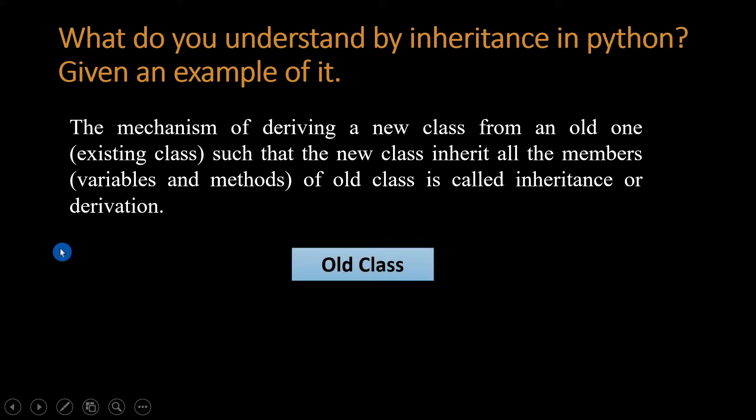You see, I have one old class that has methods and variables. I want to access those in a new class, the child class. I want to access the old class variables and methods in the new class through inheritance. That's why we write: the mechanism of deriving a new class.